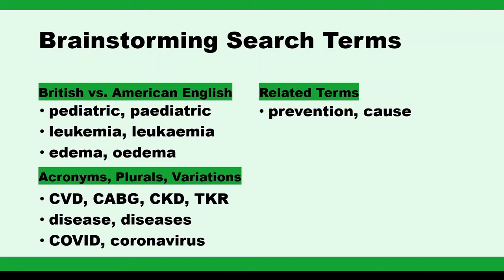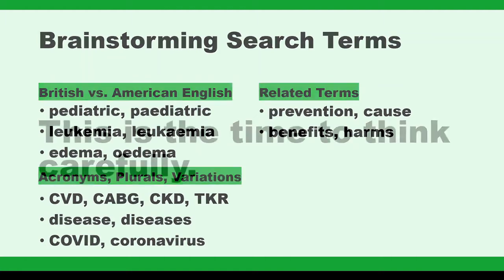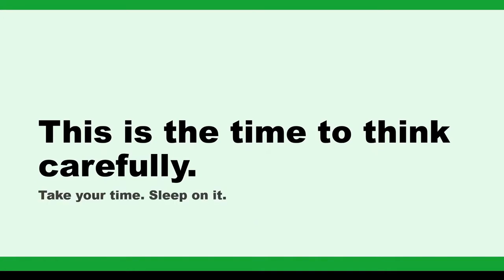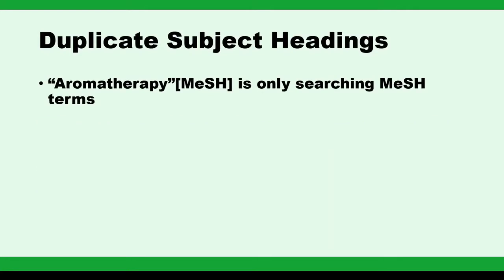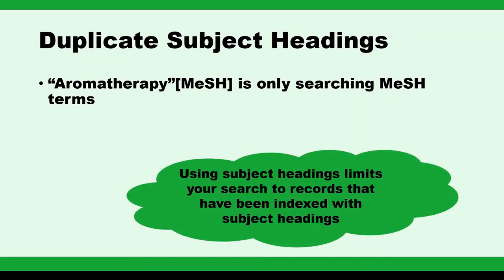Are you looking for prevention? You'll need to look for cause. Are you looking for the benefits of an intervention? You'll need to look for harms. Think carefully about how your topic is most likely represented in the literature and what bias you might introduce if you don't select your terms carefully. It is also extremely important that subject headings be duplicated as keywords, because subject headings are only searching subject headings. If you want the same term to be searched in the title, abstract, or other parts of the record, you'll need to include the keyword.